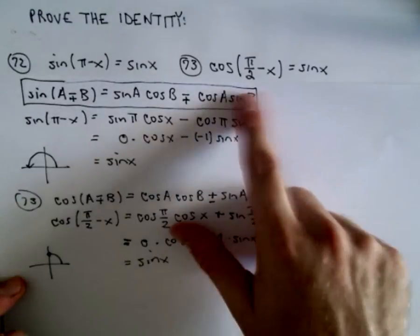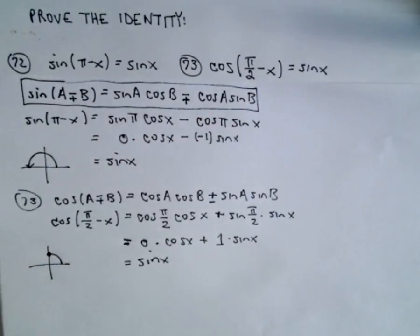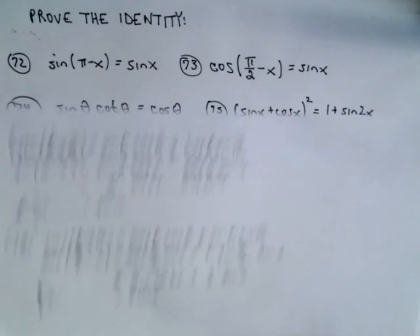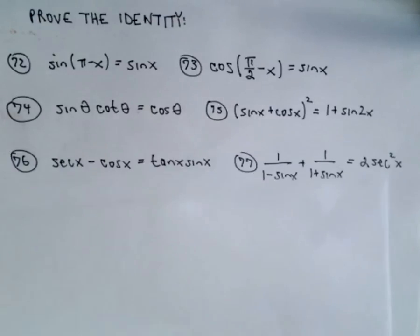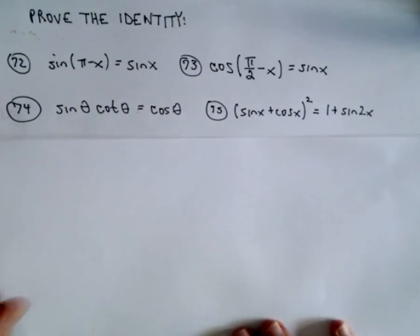And again, we get the desired result. We get sin x, which is what we wanted to show occurs. All right, let's do, I don't know, let's do 74 and 75 as well. They shouldn't be too bad. I think 74 should be super simple. If not, you definitely need to look at your basic trig relationships.